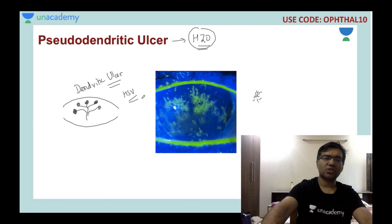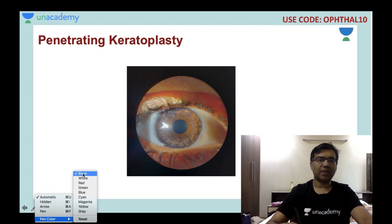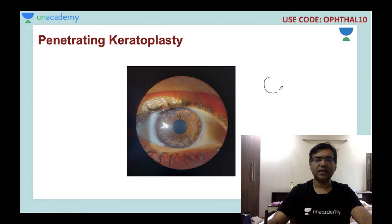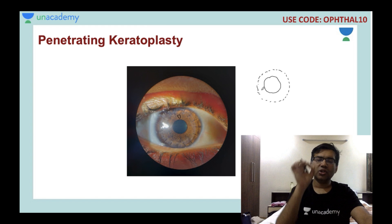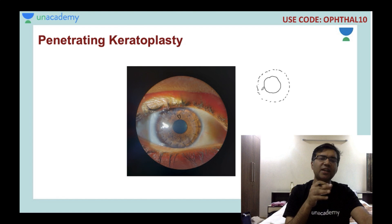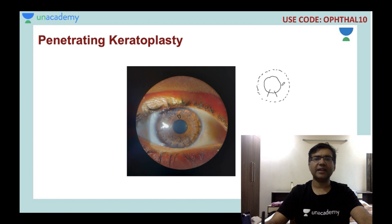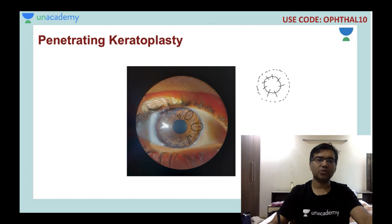This picture shows a penetrating keratoplasty being performed. The donor cornea is attached to the host cornea. The whole host cornea is not removed — only the central opacified part is removed and replaced with a near-clear donor cornea. The 10-0 monofilament nylon sutures are used to anchor the donor cornea to the host.